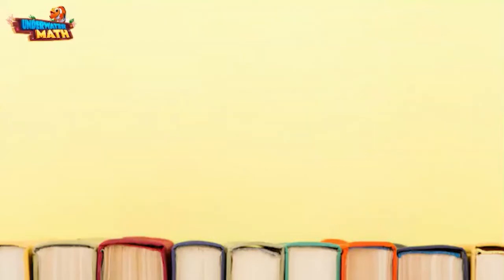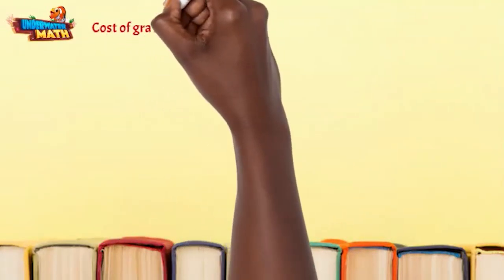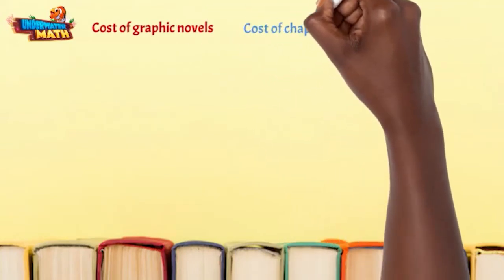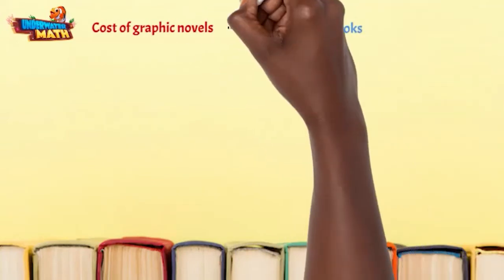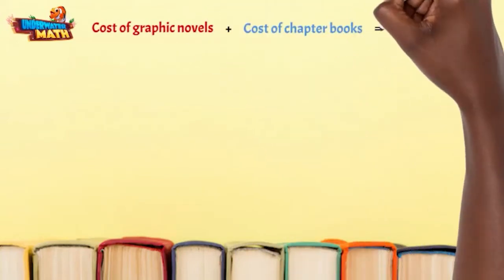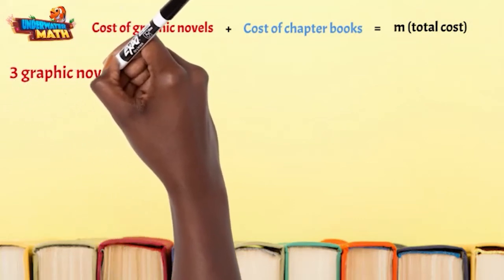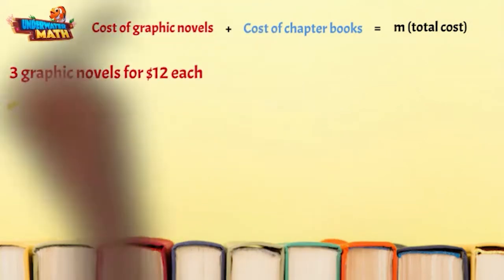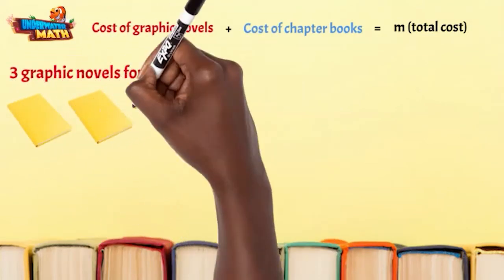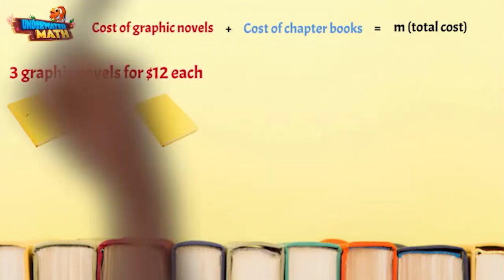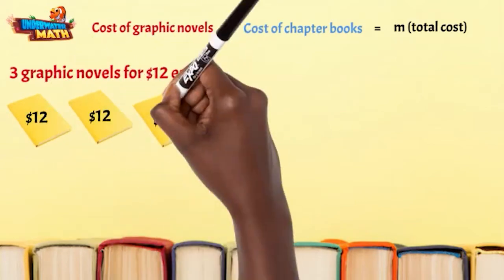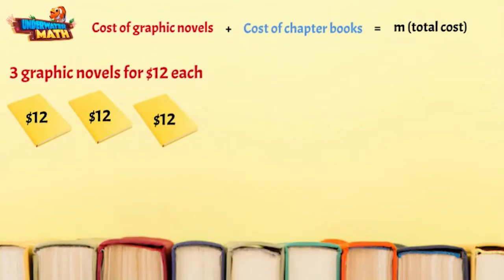To find the total cost of her books, the equations we need will be the cost of the graphic novels, the cost of the chapter books, and the sum of the two. Let's start with the graphic novels — these are $12 each and we need three of them, so our first equation will be using multiplication.